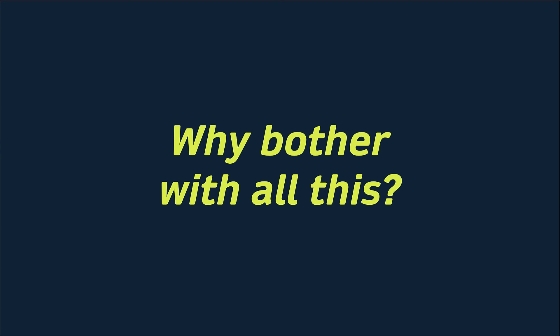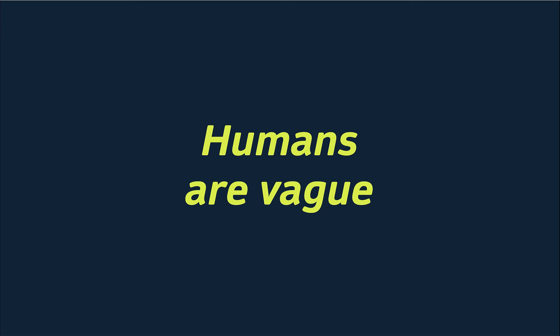So why bother with all of this? Well, humans are vague. And one of the big advances in generative AI is that they can infer meaning from vague instructions. They can ignore our spelling and grammatical mistakes. And they don't behave like command lines. They're fuzzy. And to be fuzzy, they need all this apparatus to find similar meanings and text to predict what the answer will be.